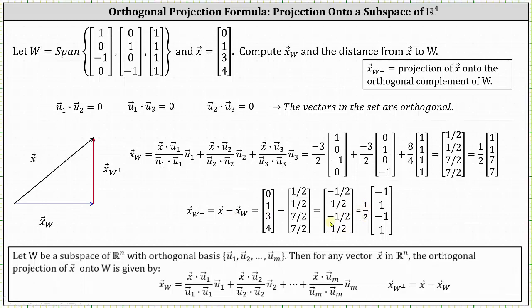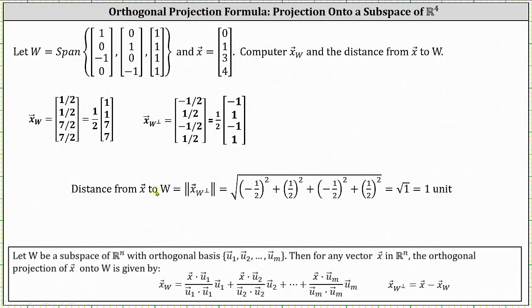And now to find the distance from vector x to W, we need to find the magnitude of this vector. The magnitude is equal to the square root of (−1/2)² + (1/2)² + (−1/2)² + (1/2)², which equals the square root of 1, which is equal to 1. So the terminal point of vector x is one unit from W.